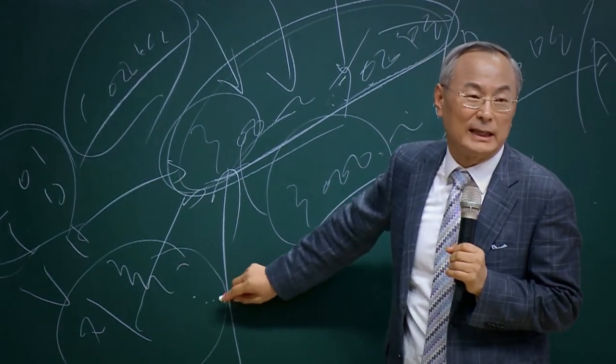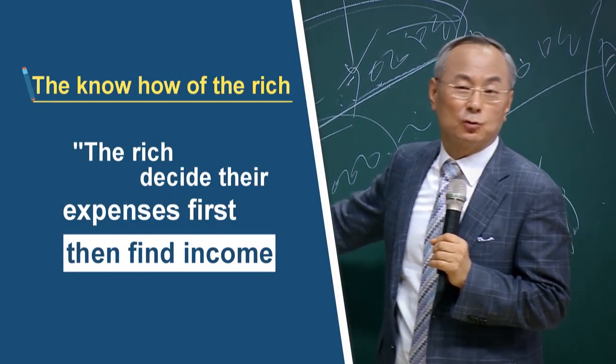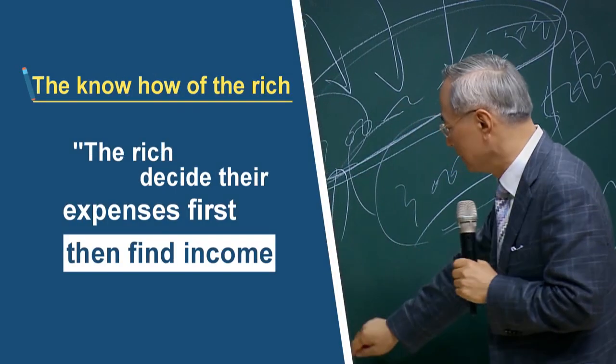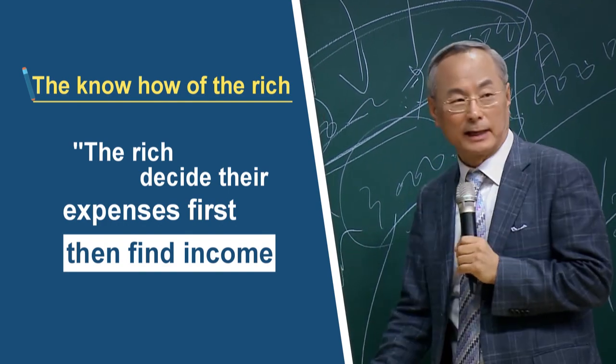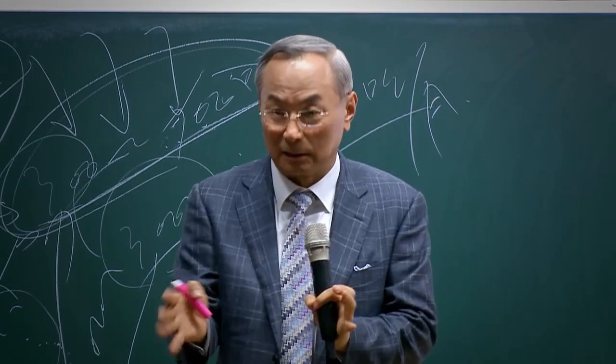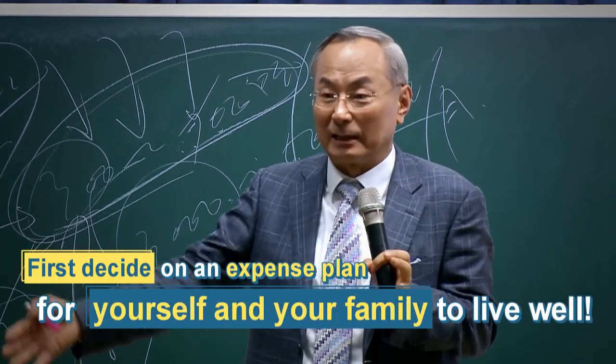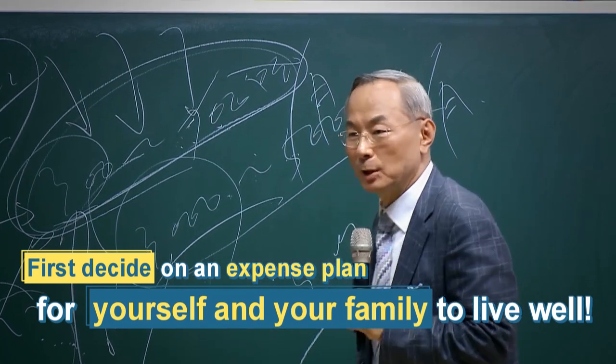This is what the rich do. They decide their expenses first. Then they find that income. Let's say your expenses are $30,000 a month. That way, you can help people in need and take care of your children, wife or husband so they can live without worrying about money.